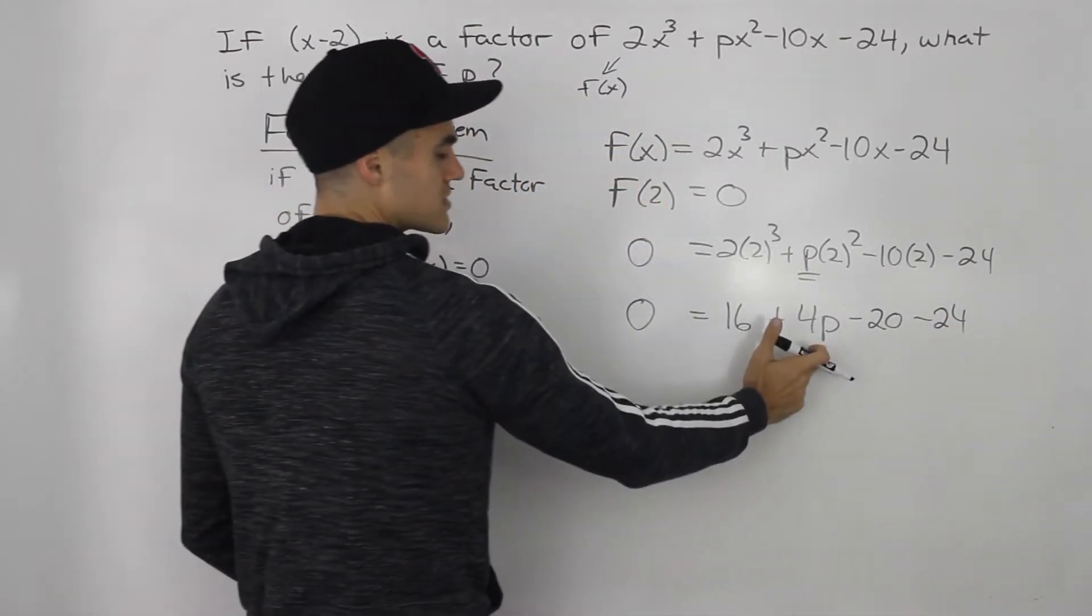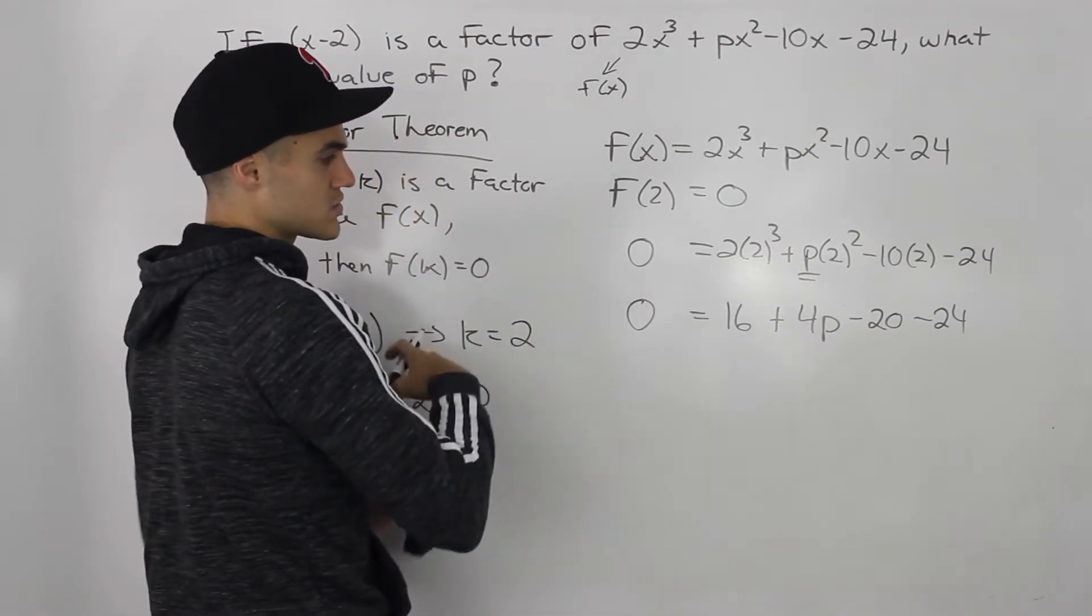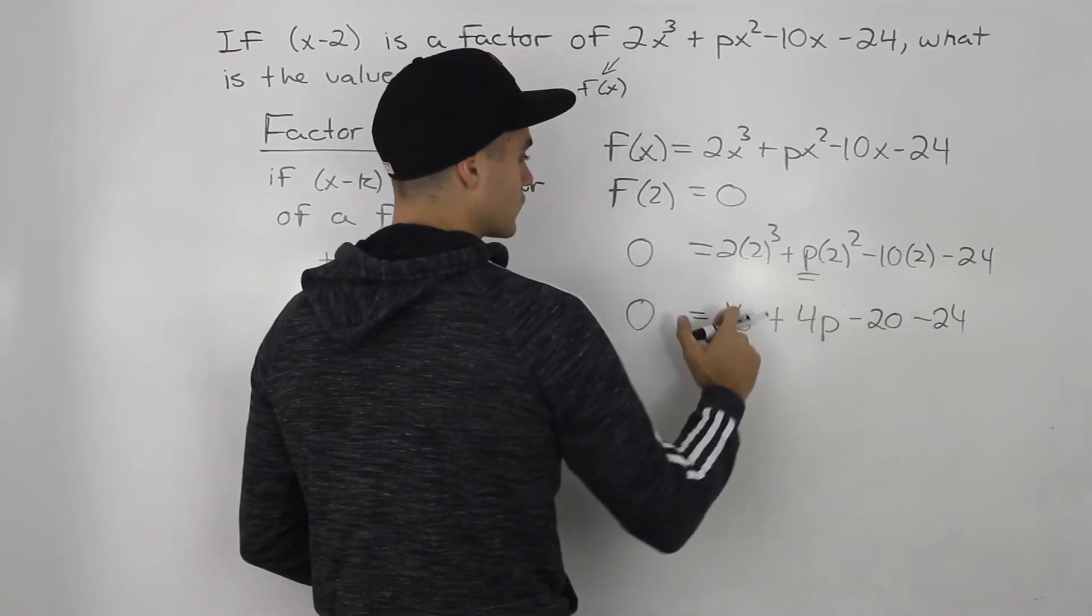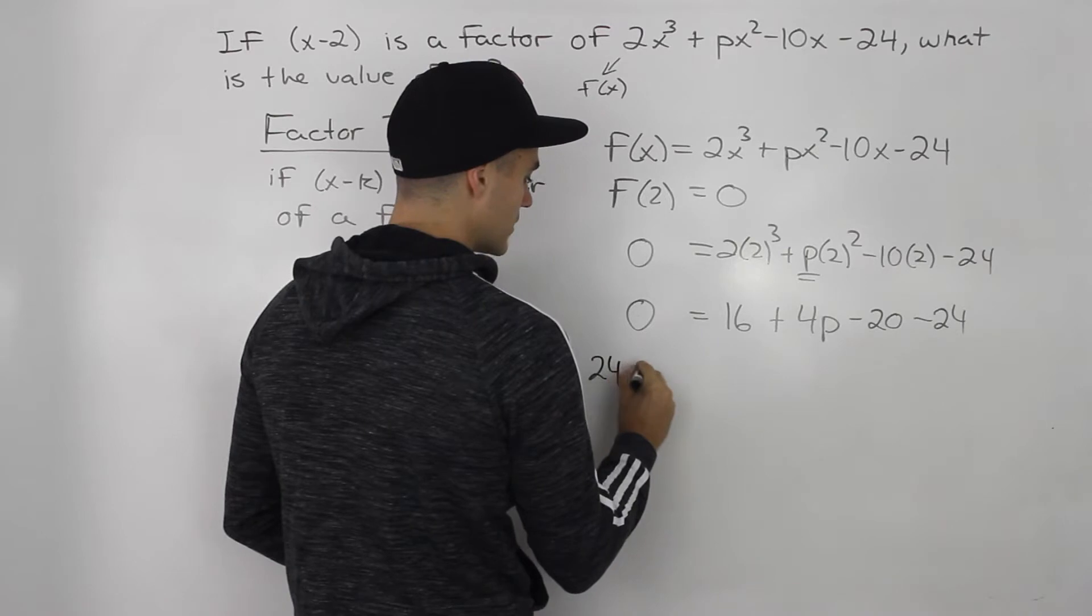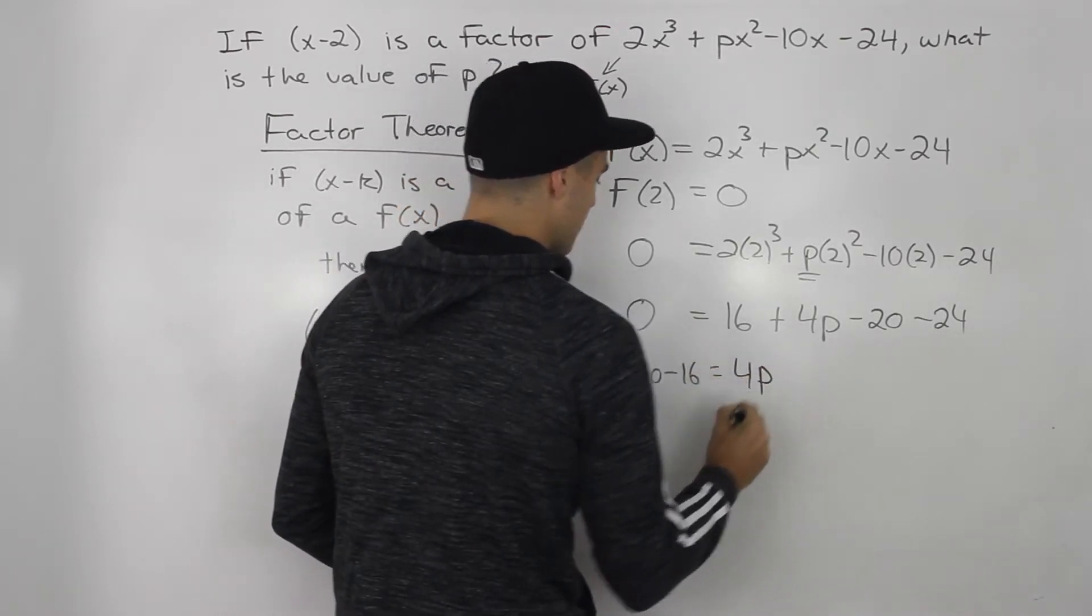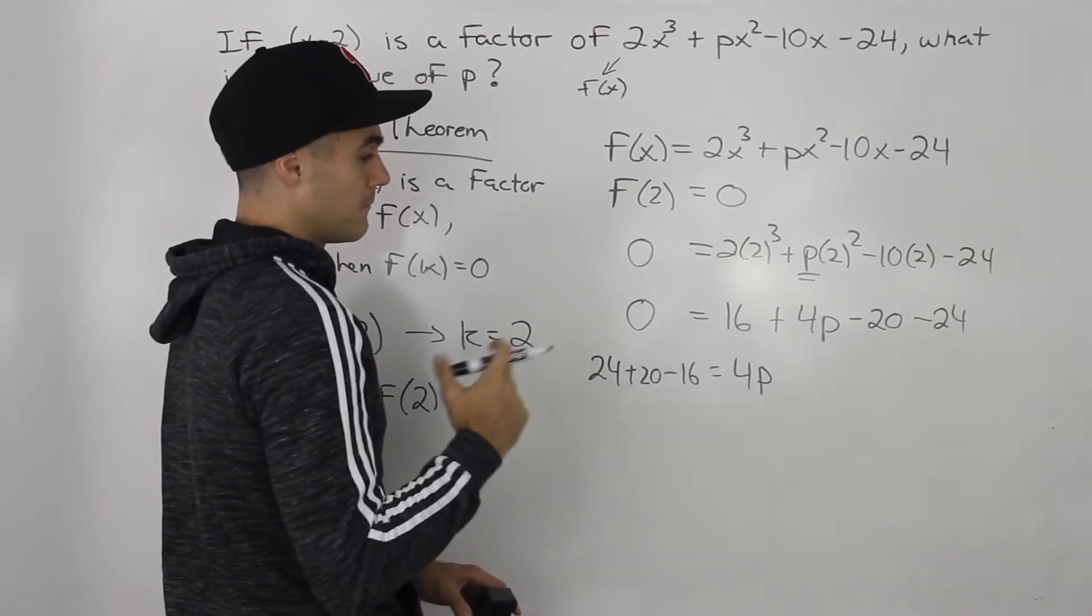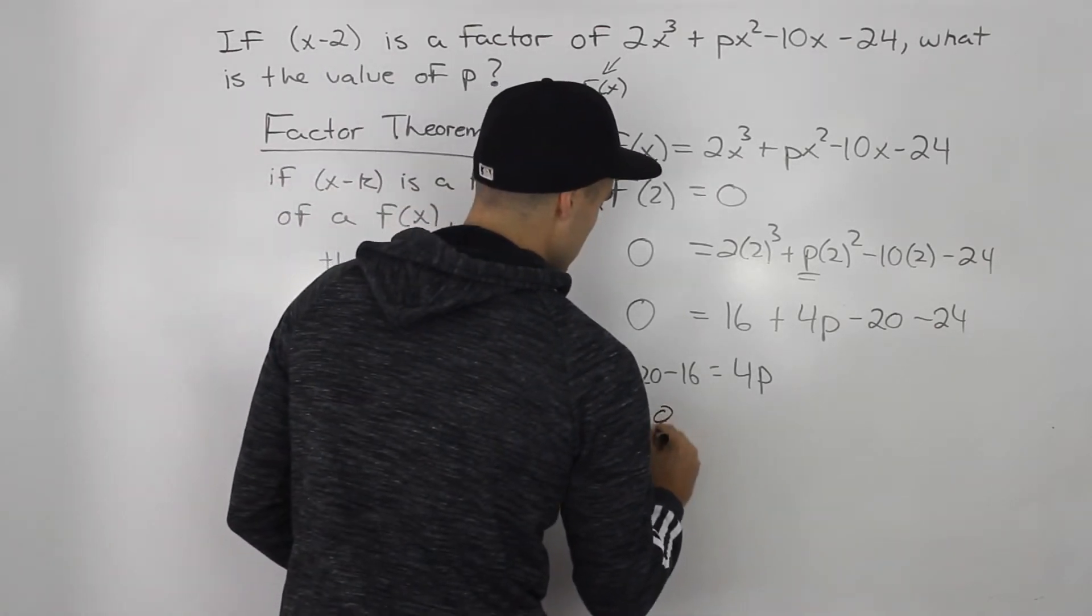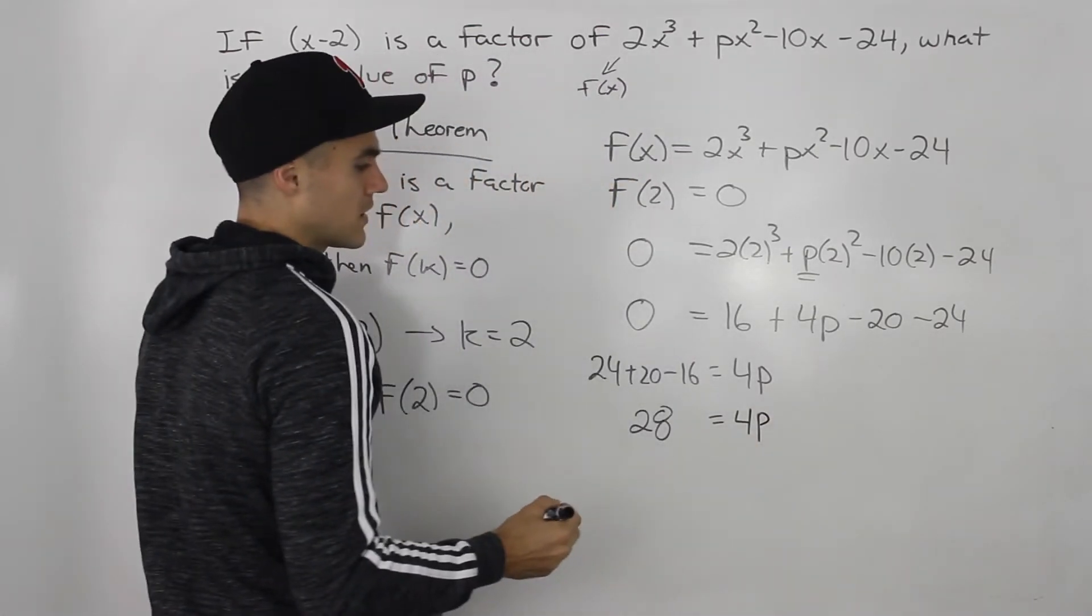So to solve for this p value, what we'll do is we'll keep the 4p on the right side, and then we'll bring all the constants over to the left side. So bringing this negative 24 over, negative 20 over, and positive 16 over, we'll end up with 24 plus 20 minus 16 equals 4p. 24 plus 20 gives us 44. Minus 16, that would give us 28 on the left side, and we'll still be left with 4p on the right side.